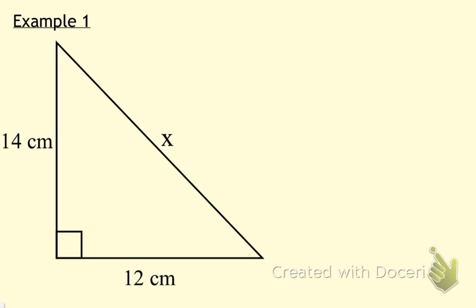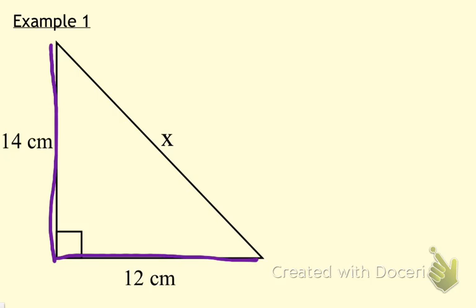Let's take a look at our first example. Please make a sketch of this right triangle with the dimensions and variables that you see. From looking at the diagram, we're going to be calculating the hypotenuse. The two sides with given dimensions form the right angle, so these are our two legs. Remember that our legs are always labeled A and B in our formula, and it really does not matter which one is A and which one is B.